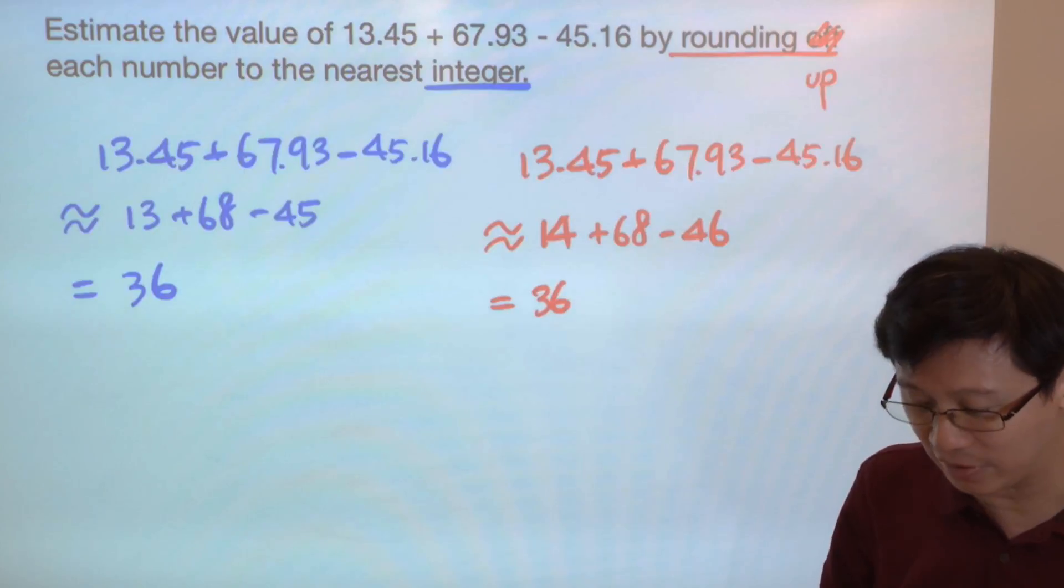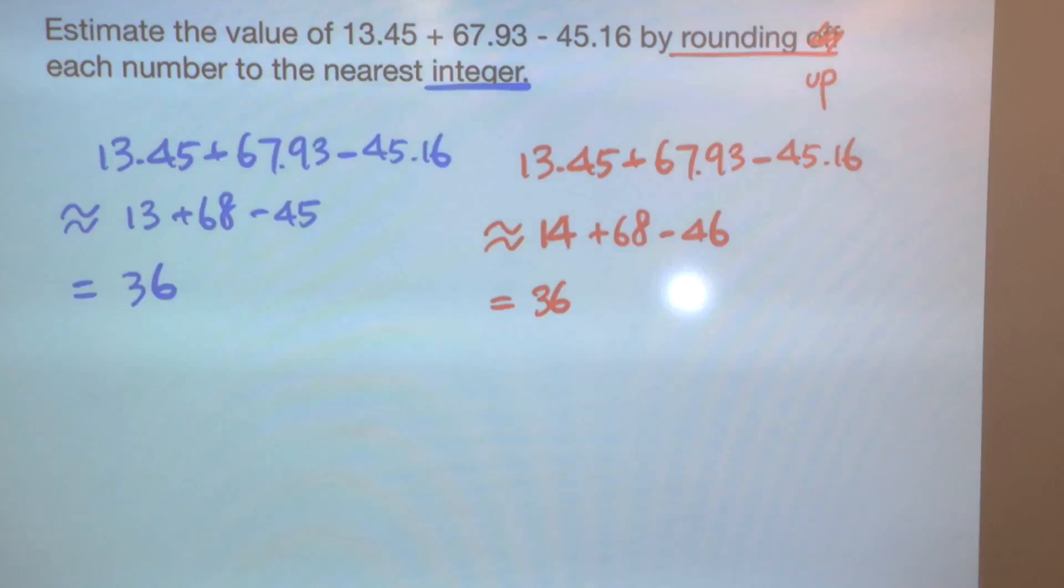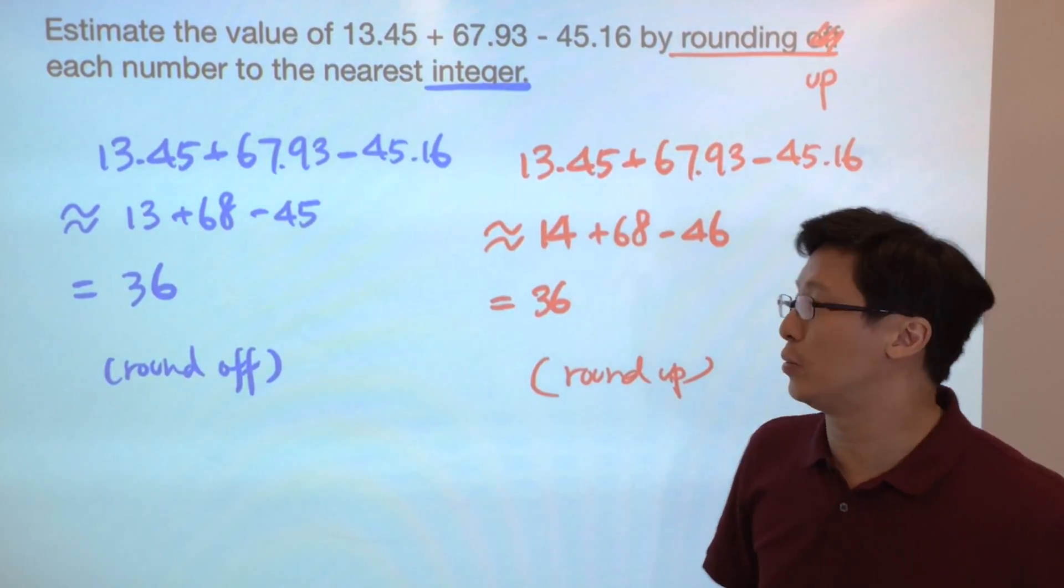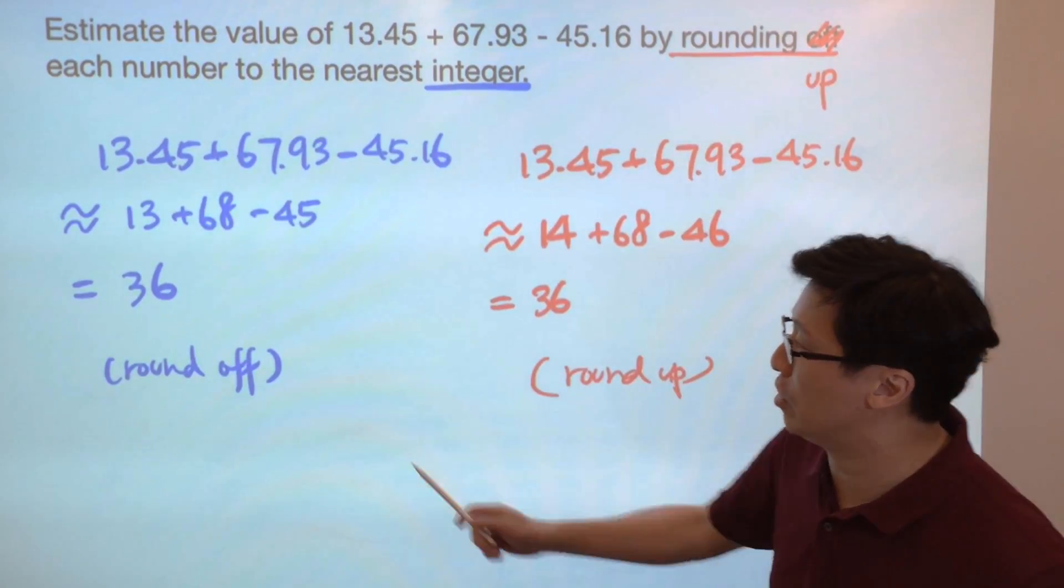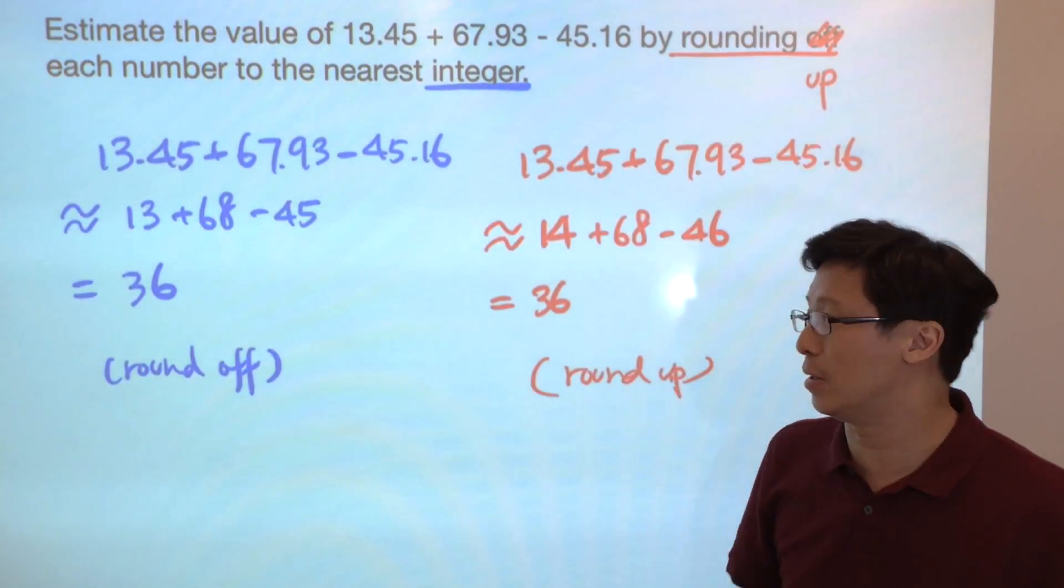Actually, we can do a little bit explanation of the same final answer. Why are they the same? So if we do the round off, this number we have only 13, this is minus 45.